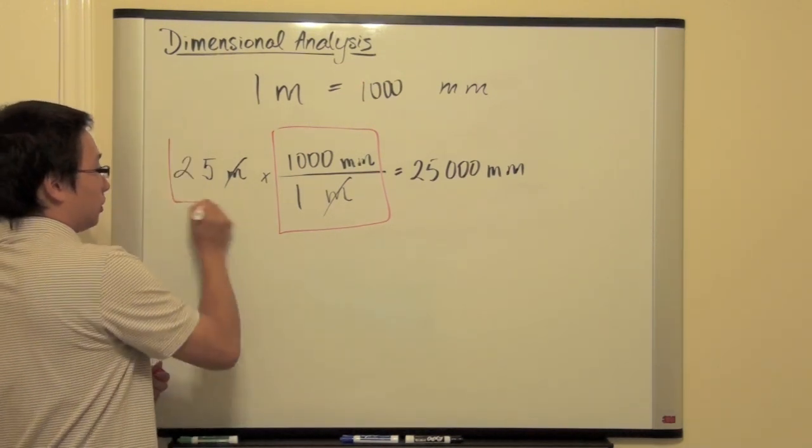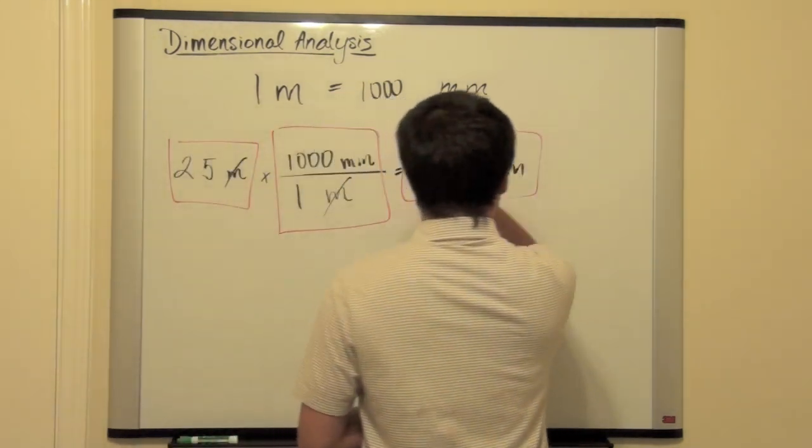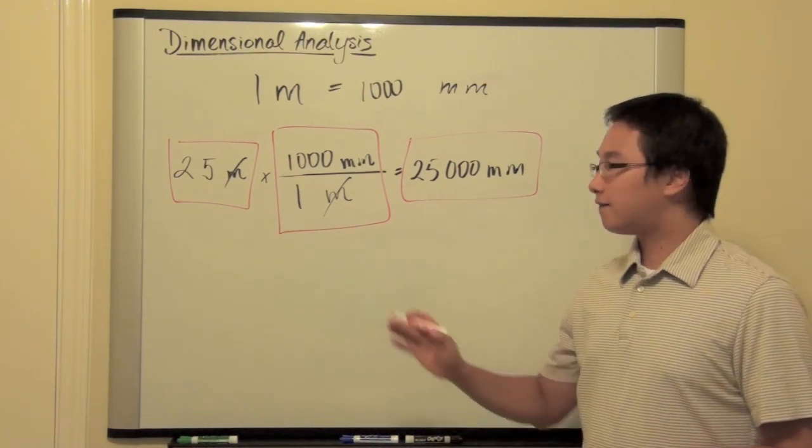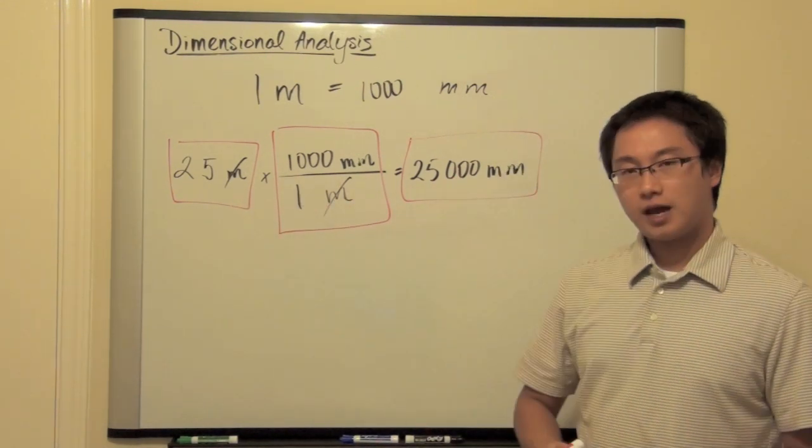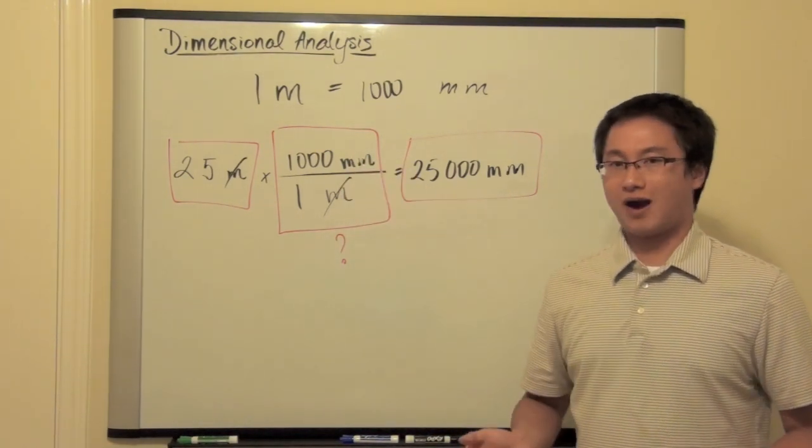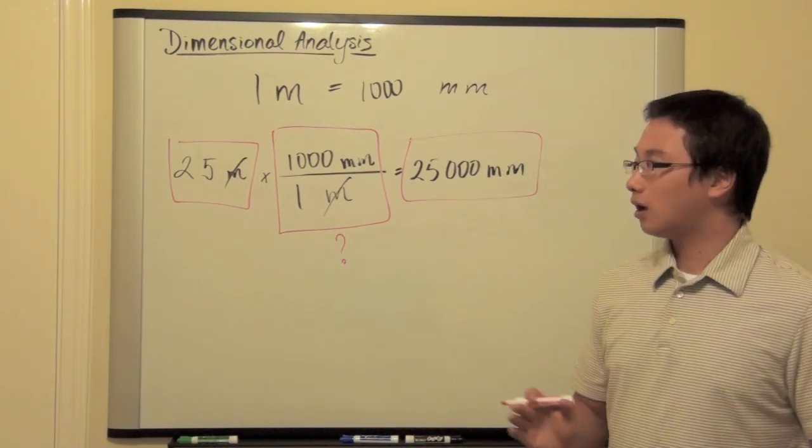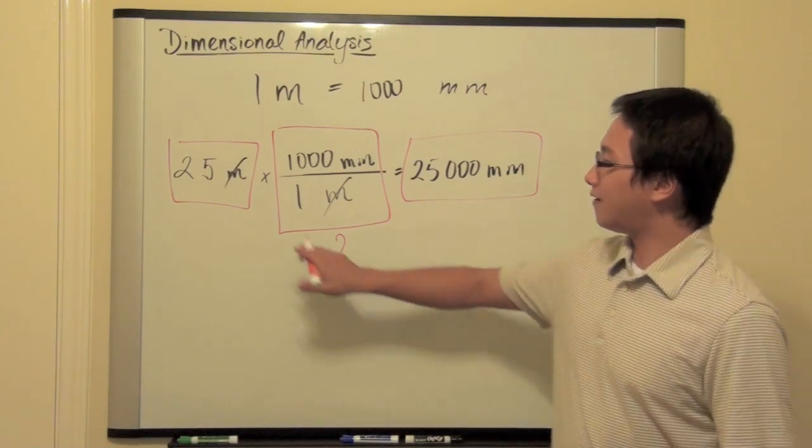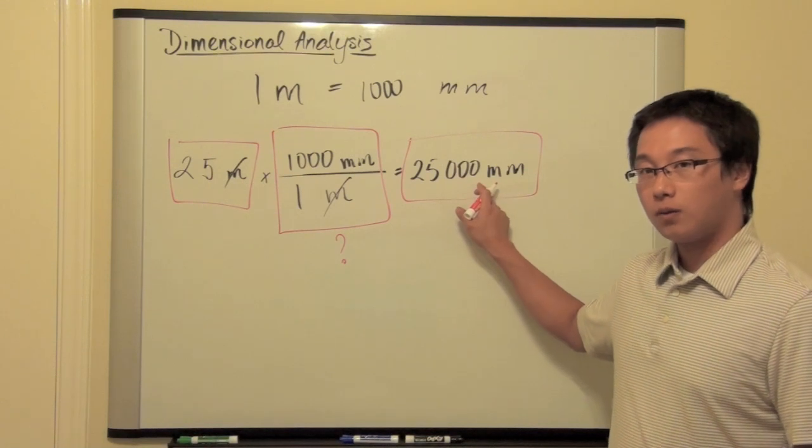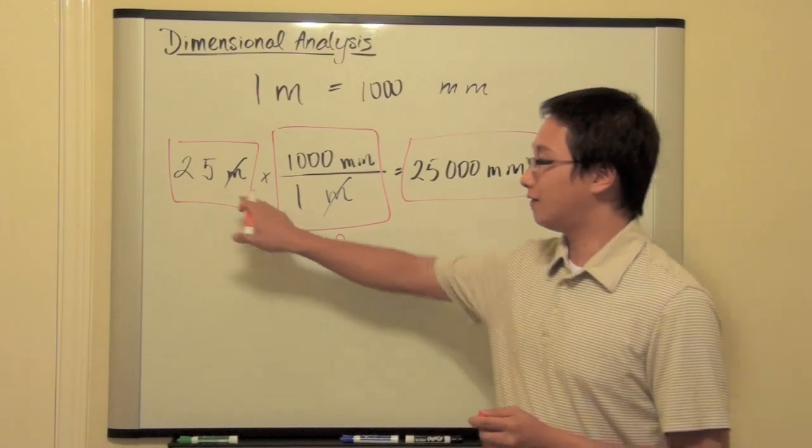What we understood right here is this. 25 meters is equal to 25,000 millimeters. Now, if these two terms are the same, what is the value of this fraction? What are we multiplying indeed? So, that's the question. Now, if they are equal, if they are equal, that means this fraction must not change this value.